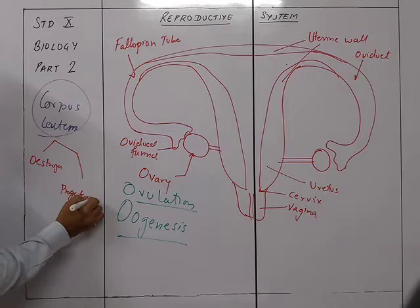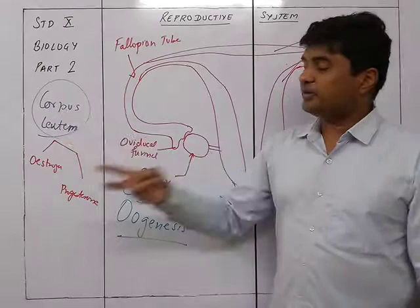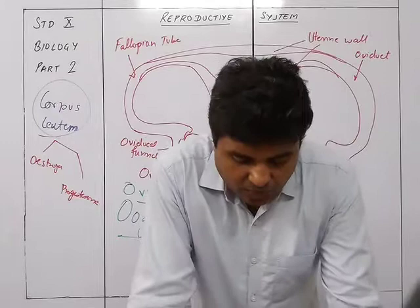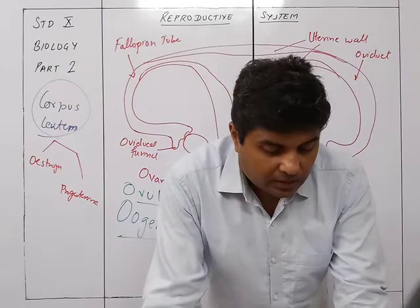In males, testosterone was produced by the Leydig cells inside the testes. In females, the corpus luteum produces two kinds of hormones for the female body — estrogen and progesterone. Estrogen is secreted by the follicle prior to ovulation.